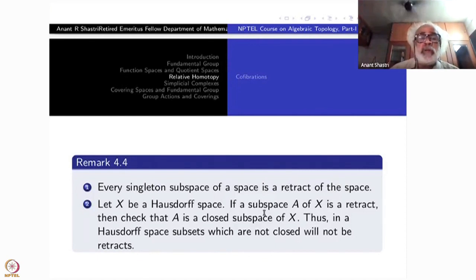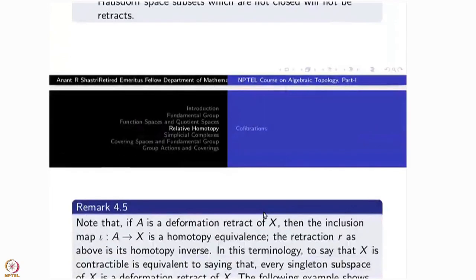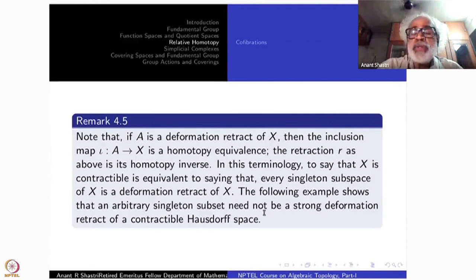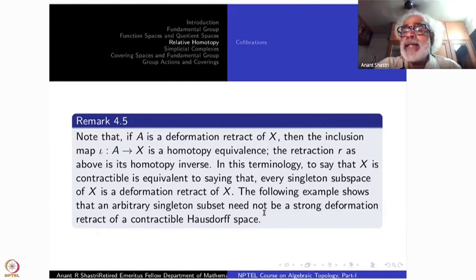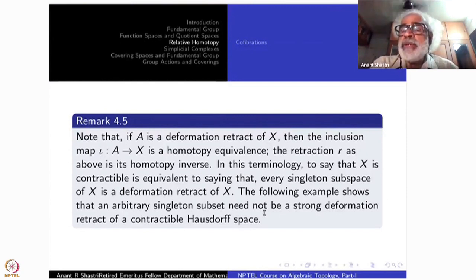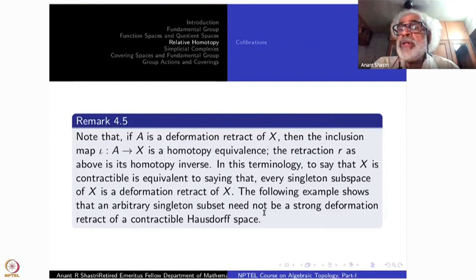If A is a deformation retract of X, then the inclusion map is a homotopy equivalence — the retraction R is its homotopy inverse. In this terminology, to say that X is contractible is equivalent to saying that every singleton subspace of X is a deformation retract. In a convex set it is actually a strong deformation retract, as we showed, but for an arbitrary contractible space it need not be a strong deformation retract.